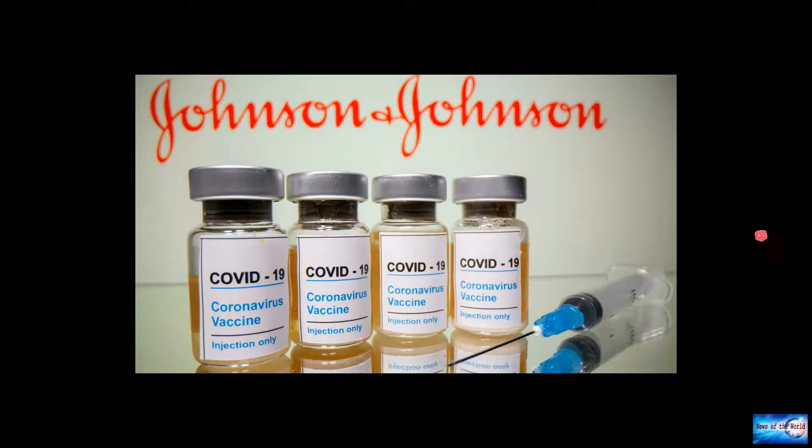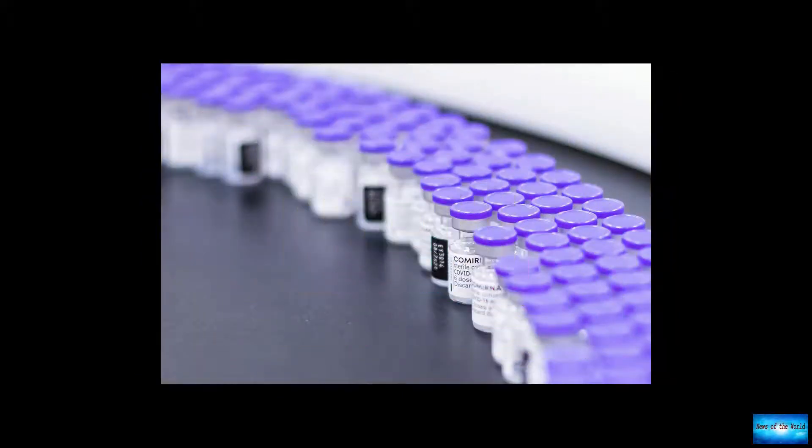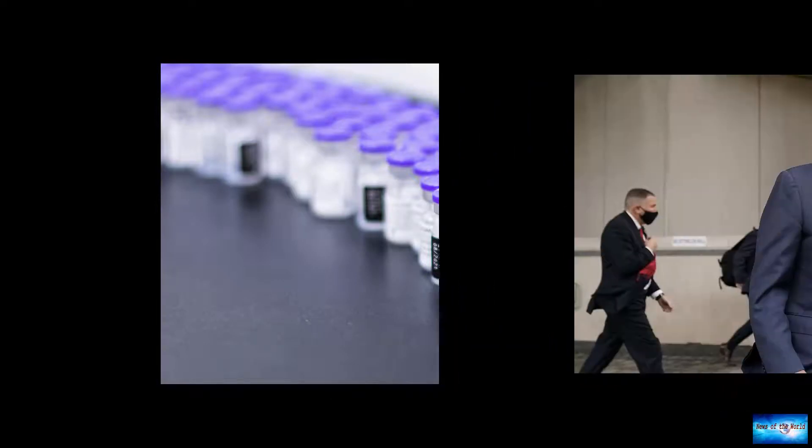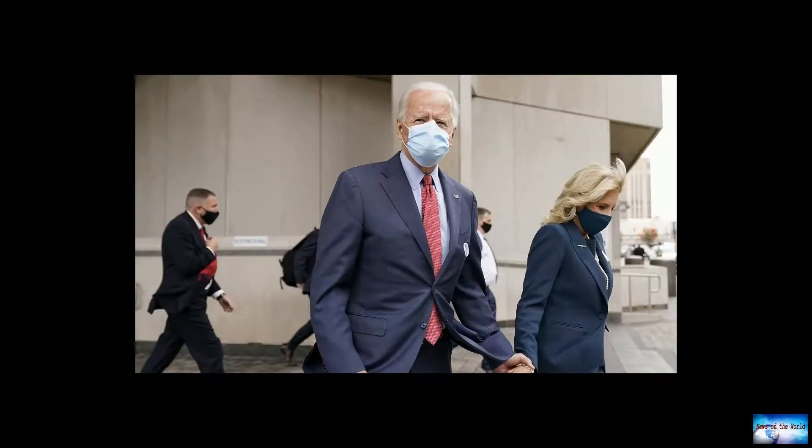But Biden stressed that this pandemic is a pandemic of the unvaccinated. We still have over 70 million Americans who have failed to get a single shot. To make matters worse, we have elected officials actively working with false information to undermine the fight against COVID-19, Biden said. This is totally unacceptable.